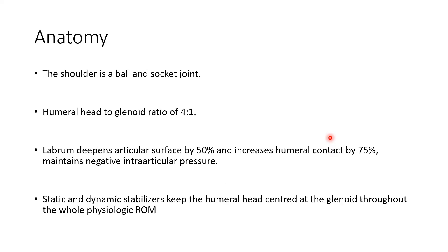Starting with a bit of anatomy: the shoulder is a ball and socket joint. The humeral head to glenoid ratio is about 4 to 1. The labrum deepens the articular surface by 50% and increases humeral contact by 75%, and also maintains negative intra-articular pressure. We have static and dynamic stabilizers to keep the humeral head centered at the glenoid throughout the full physiological range of motion.